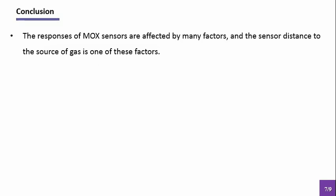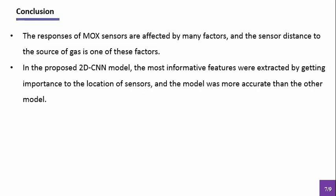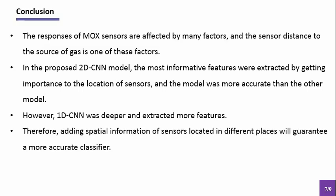And in conclusion, the response of metal oxide gas sensors are affected by many factors and the sensor distance to the source of gas is one of these factors. Here, by proposing a two-dimensional CNN model, the most informative features were extracted by getting importance to the location of sensors. And the model was more accurate than other previous models. However, one-dimensional CNN was deeper and extracted more features. And in conclusion, better feature extraction and more accurate classification can be obtainable through spatial and temporal information in two-dimensional CNN when we are working with an electronic noses with similar sensors in different positions. Thank you very much.